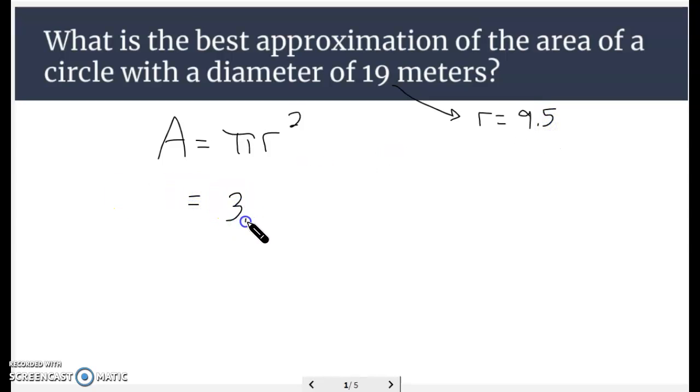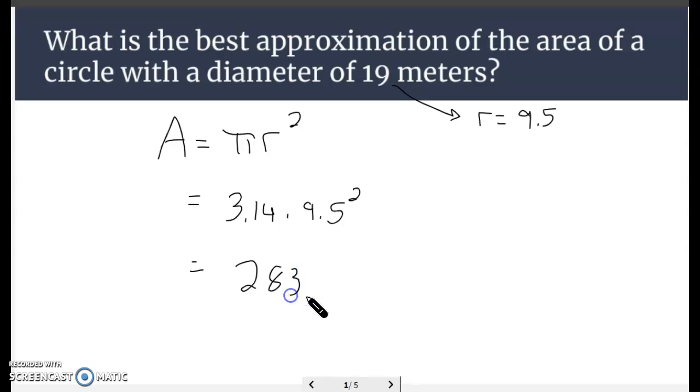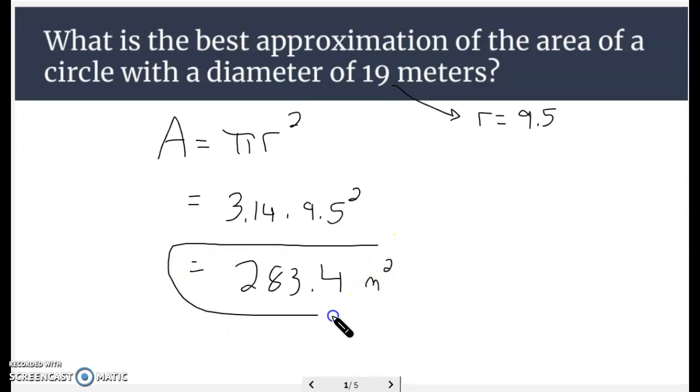So to solve this, 3.14 times 9.5 squared, calculator says 283.385. We'll just go ahead and round that to 283.4 square meters. That's the area of the circle with a diameter of 19.